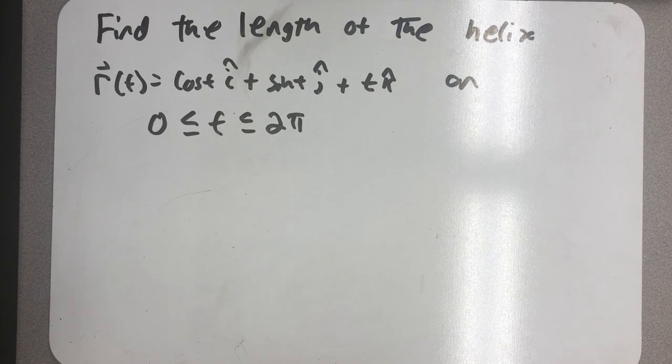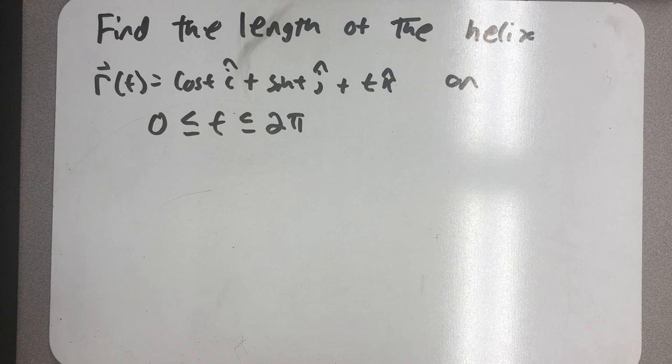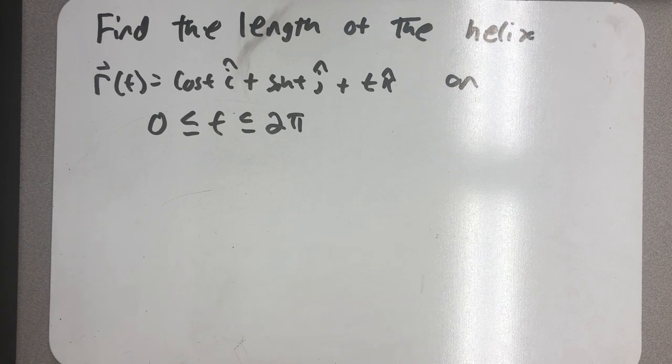Let's find the length of the helix. R of t is cosine of t i plus sine of t j plus t k on the interval from 0 to 2 pi.